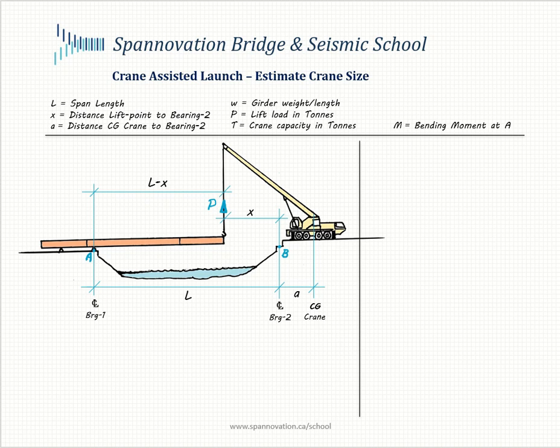In this tutorial we will estimate the crane size required for a typical crane-assisted launch, which is used in the erection of generally single-span steel girder bridges. The girder structural steel, generally a pair of girders, are launched from behind one abutment and assisted by a crane positioned behind the opposite abutment through a cantilever tip support.